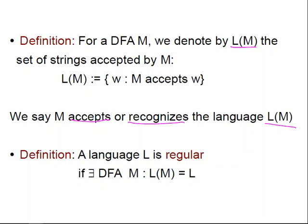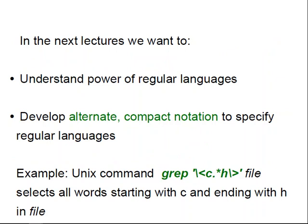And we make an important definition. Now we're going to say that a language L is regular if it is the language of some DFA, if there exists a DFA M whose language is L. So this is our definition of regular languages, and later we're going to see several other equivalent definitions, which also indicate the importance of regular languages, because you have several different definitions of the same object. In the next lectures, we're going to understand the power of regular languages.